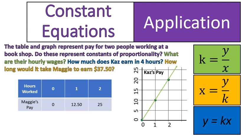Our final question is an application question. You'll notice it has a table and a graph in it. And those come from previous lessons where we talked about determining if tables and graphs represented a constant of proportionality. So you do need to know that. But I'll explain it as we go. Here's the question. The table and graph represent pay for two people working at a bookshop. Do these represent a constant of proportionality? What are their hourly wages? How much does Kaz earn in 4 hours? How long would it take Maggie to earn $37.50? So it comes down to that question. What I'd like you to do is pause the video, try this one out, try and answer all 4 questions using, I color coded them so you can go ahead and use the equations that you see there on the right. Try it out and then come back.